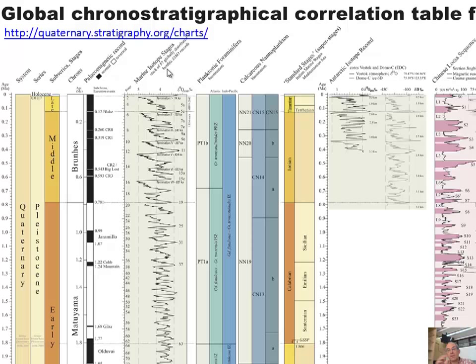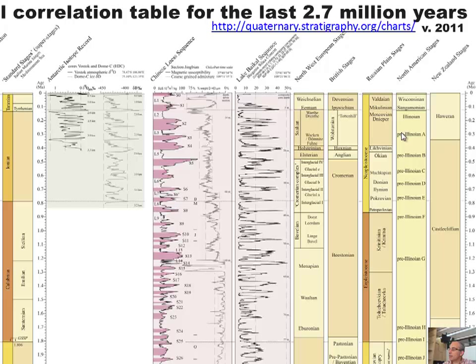We've already talked about marine isotope stages, which is basically a measure of sea level and the balance between ocean volume and ice volume — a big tool for correlation. There's also a lot of effort in polar regions, especially Antarctica, drilling to get long critical records. The Chinese loess sequence is also shown — loess is silt moved by wind, probably mostly derived from retreating glaciers.